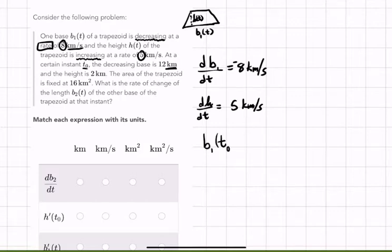So we're going to say b sub one, when we plug t naught into it, at a certain point in time, the length is 12 kilometers. All right, so we identified another number. So we have three expressions or three equations and three numbers. The height is two kilometers. So now we have another one. The height at t naught is two kilometers.